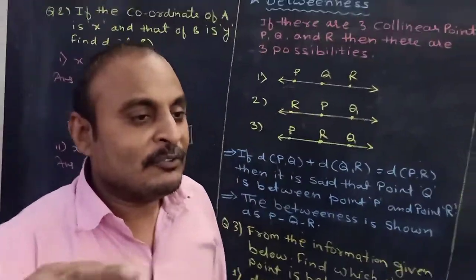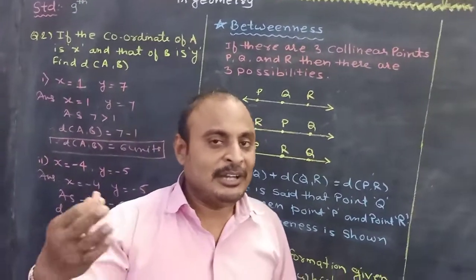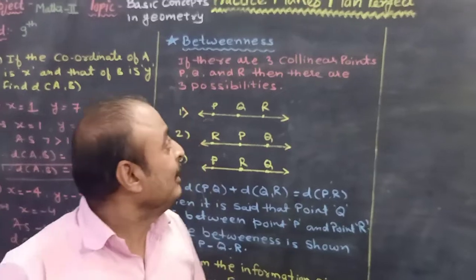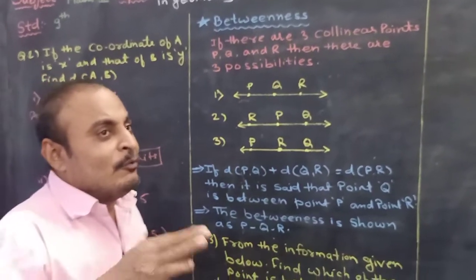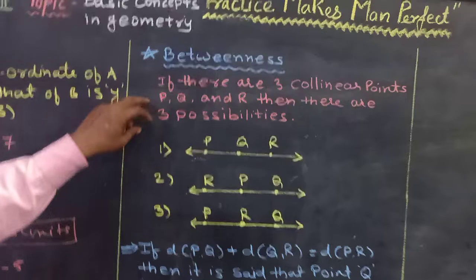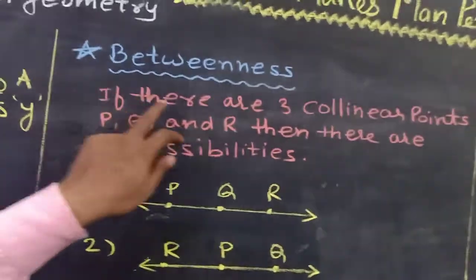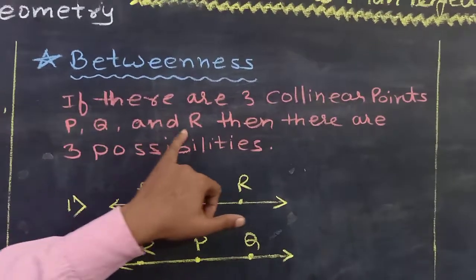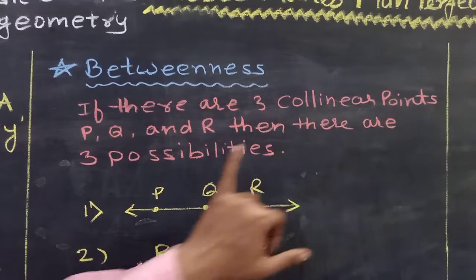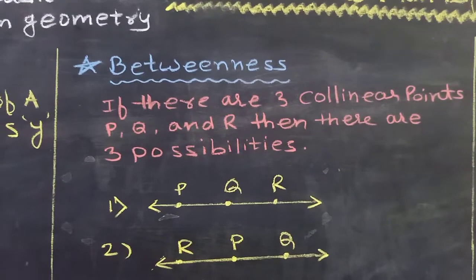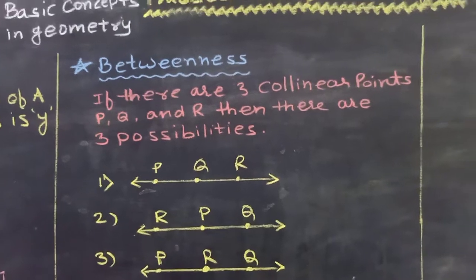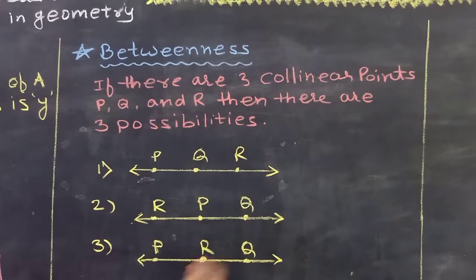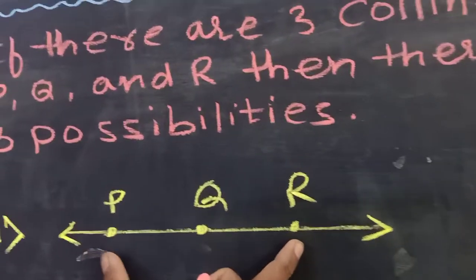In the same way, solve all the remaining questions in your textbook. Now move towards Question Number 3, which is related to betweenness. What is betweenness? If there are 3 collinear points — say points P, Q, and R — then there are 3 possibilities in terms of betweenness. The first possibility is that point Q may lie in between P and R.